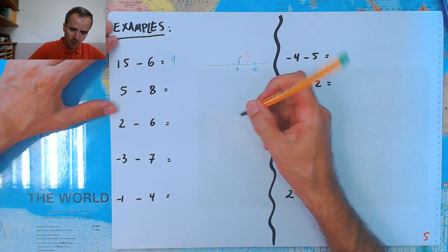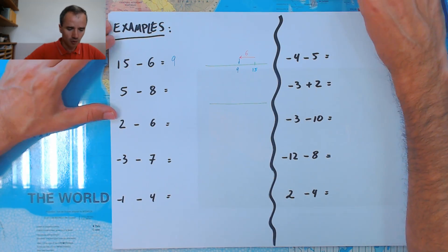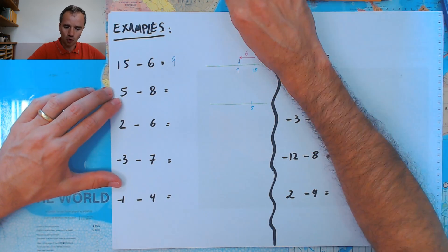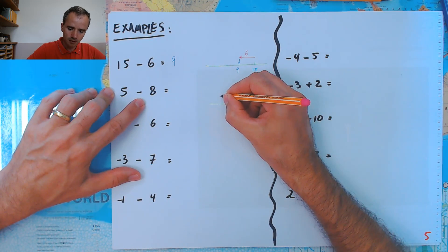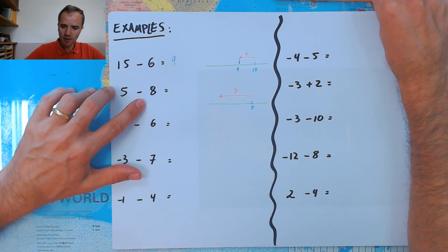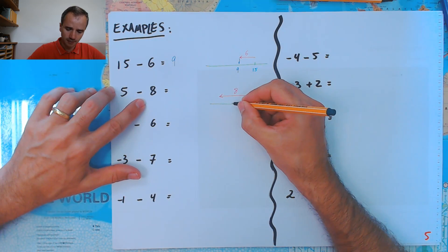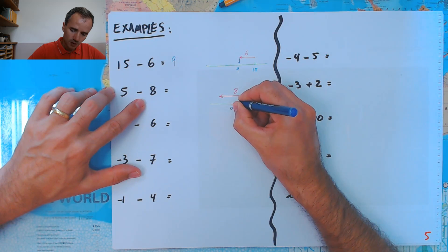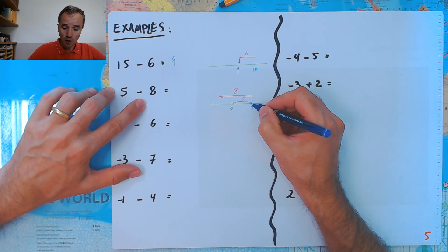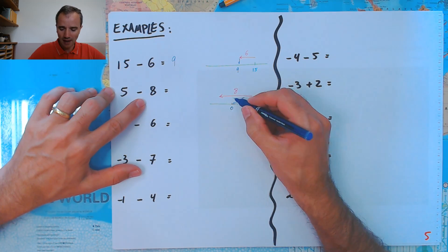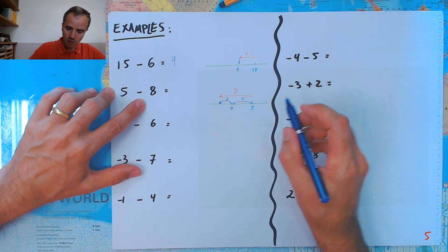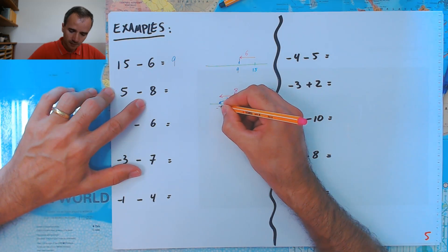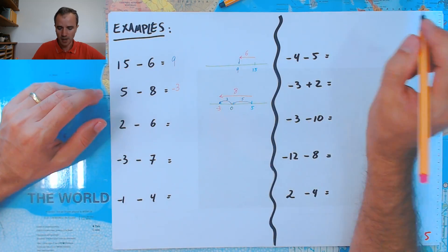Another one: we still have our number line. We're going to start at 5 and go backwards 8. In the middle of the way we're going to find the 0. This is going to be the 0 in here. So we go back 5 to reach zero, but we have to go back three more — why? Because 5 plus 3 is 8. So therefore this is going to be negative 3.